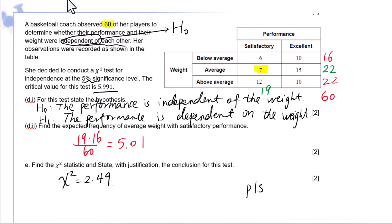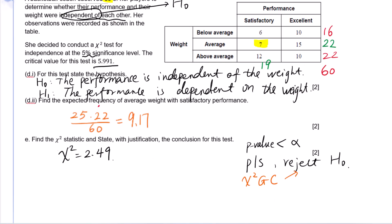Remember this: p-value less than significance level, reject H0. It's an opposite: chi-squared greater than critical value, reject H0. That's how you remember: when chi-squared greater than critical value k, reject H0. Chi-squared is 2.49, this critical value is 5.991, less than. So not enough evidence to reject H0.